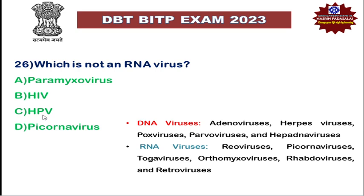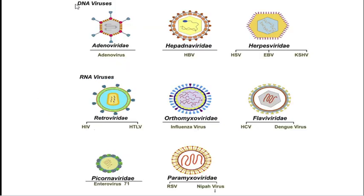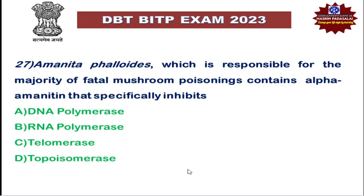HPV is an enveloped virus containing DNA genetic material. DNA viruses include adenovirus, HPV, hepatitis B virus (HBV), herpes simplex virus (HSV), Epstein-Barr virus (EBV), and Kaposi's sarcoma-associated herpesvirus (KSHV) — all having DNA as genetic material. RNA viruses include HIV, HTLV, influenza virus, hepatitis C virus (HCV), dengue virus, enterovirus, RSV, and Nipah virus — all having RNA as genetic material.